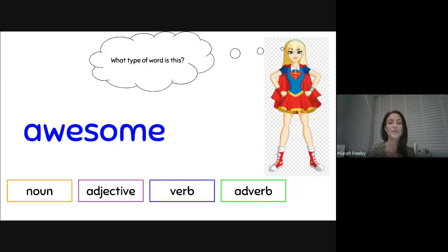What type of word is this? Awesome. Is it a noun, adjective, verb, or adverb? Brilliant. Well done. It is an adjective. The awesome superhero saved the world.